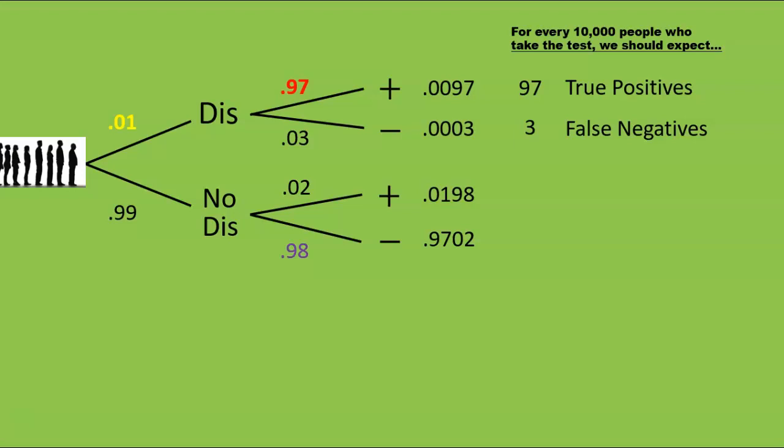Continuing on this way, we see that of every 10,000 people, we expect 198 people to have no disease, yet test positive. That is, we expect 198 false positives. We also expect 9,702 of the people, the vast majority, do not have the disease, and for the test to say so. That is, of every 10,000 people, we expect 9,702 true negatives.